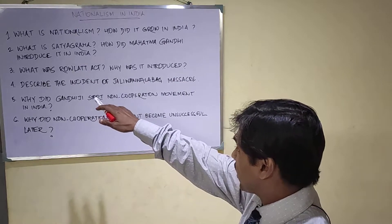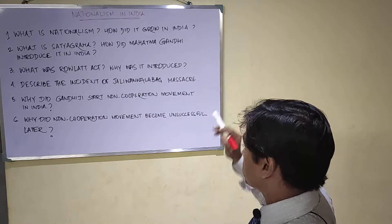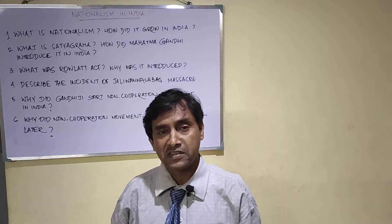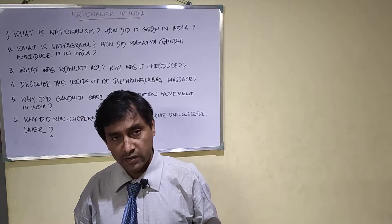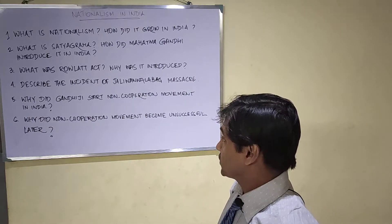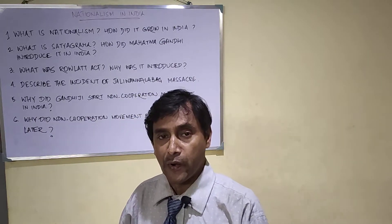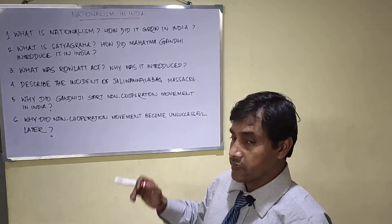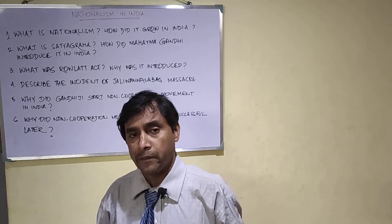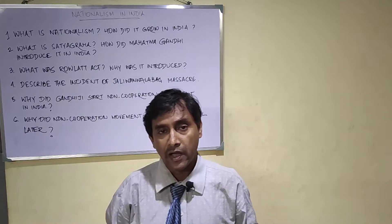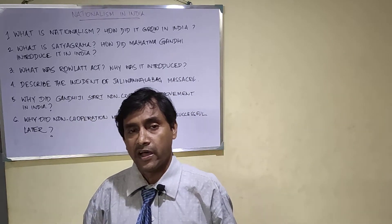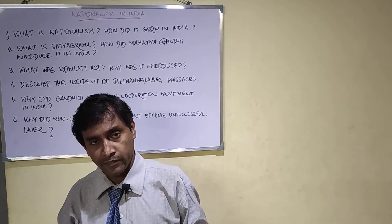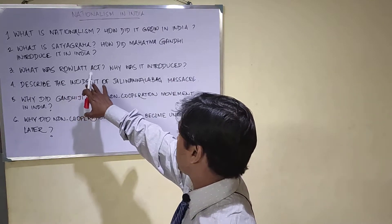What was the Rowlatt Act? Why was it introduced? The Rowlatt Act was introduced in 1919 hurriedly in the British Imperial Legislative Council. This act was introduced to repress the Indian political activists. It gave enormous power to the British government — they could detain political prisoners for two years without any trial. This is called the Rowlatt Act.